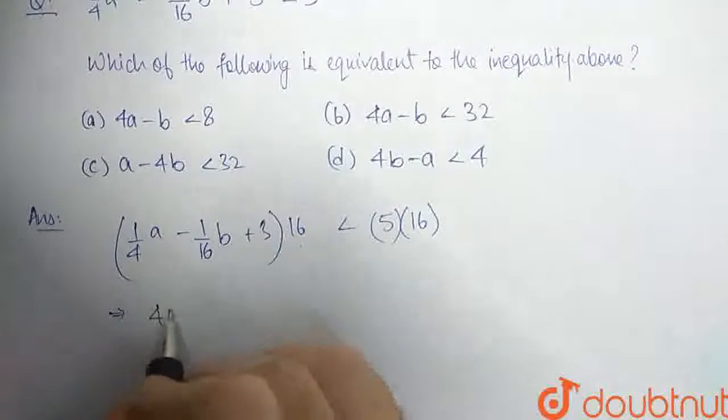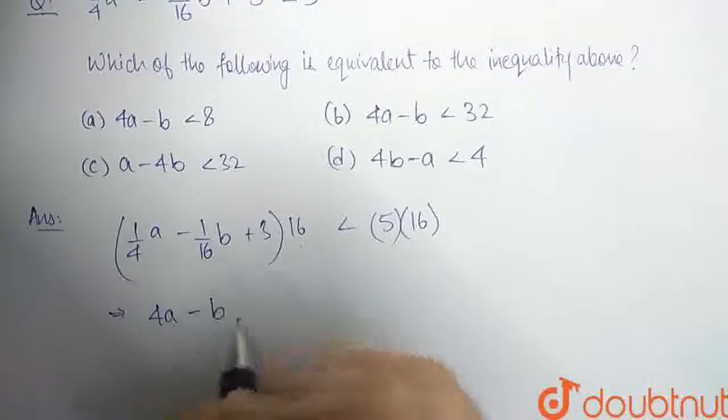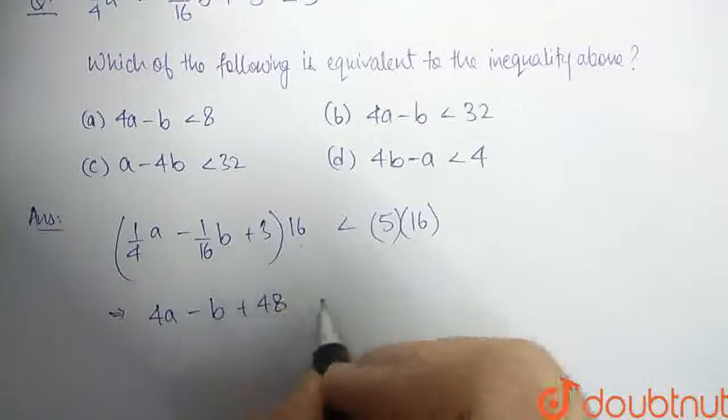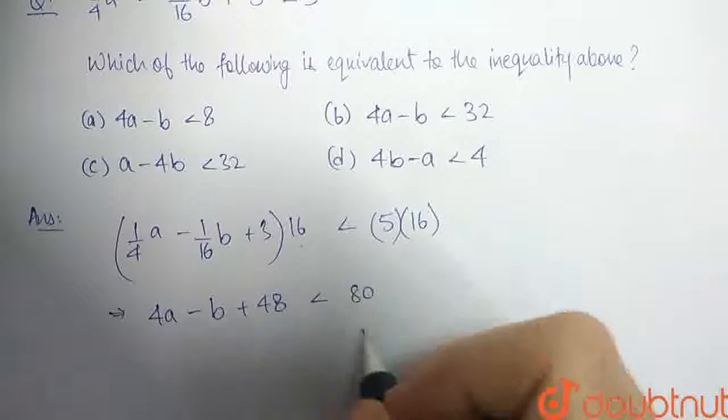We have 4a minus b plus 48. So, we have 4a minus b plus 48 is less than 80.